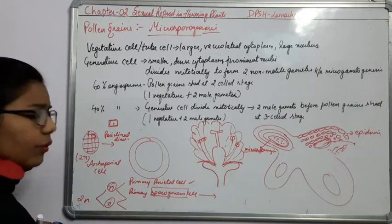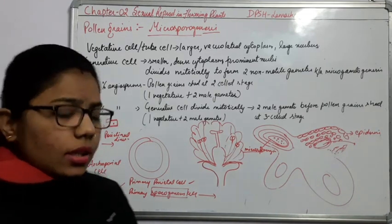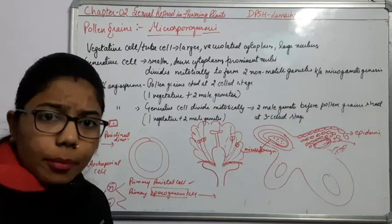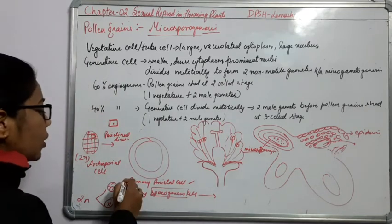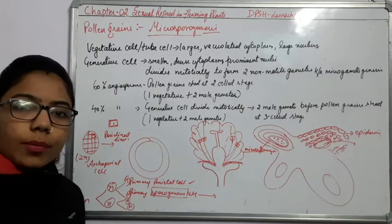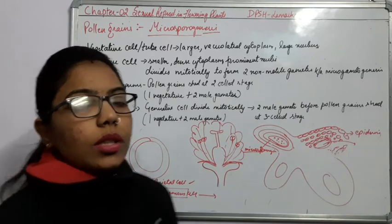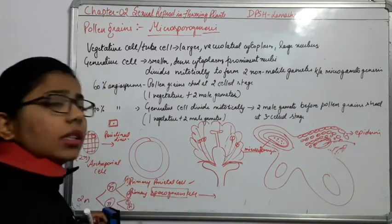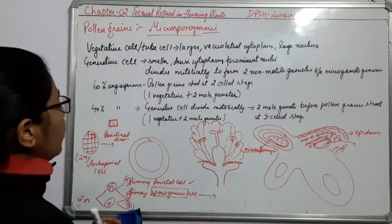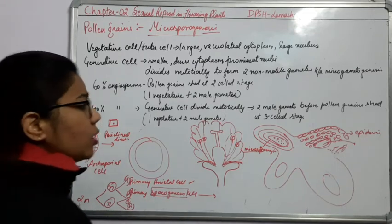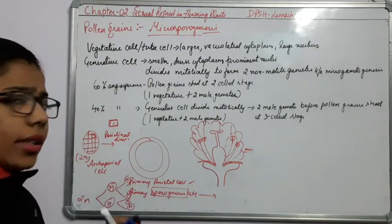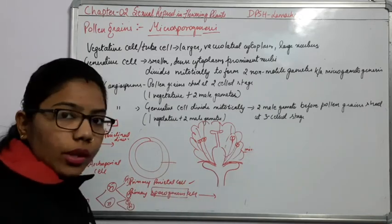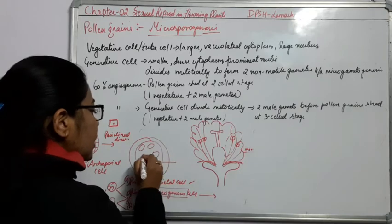If these haploid cells again undergo division — another division just like a mitotic division — the ploidy level will remain the same but the number gets increased. So from N we are getting N, N, N, N — four haploid spores. These haploid spores are going to form the pollen grains.